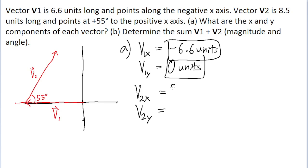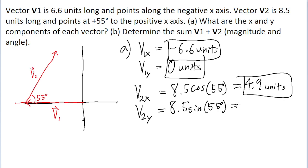So v sub 2x equals 8.5, the magnitude of the vector, multiplied by the cosine of 55 degrees, which comes out to be 4.9 units. The y-component uses the sine function: 8.5 times the sine of 55 degrees, which comes out to be 7 units. And that is our answer for part A.